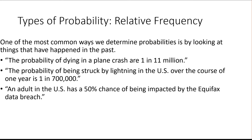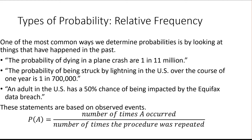It says all adults in the U.S. have a 50% chance of being impacted by the Equifax data breach, so the probability would be 0.5 — there's a 50-50 chance either you were or you weren't. The way we do these relative frequency or experimental probabilities is you just take the number of ways that something happened divided by the total, and that tells you the probability of that event happening.